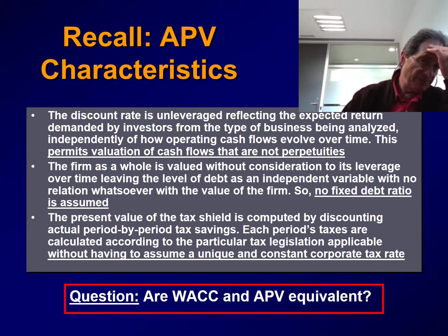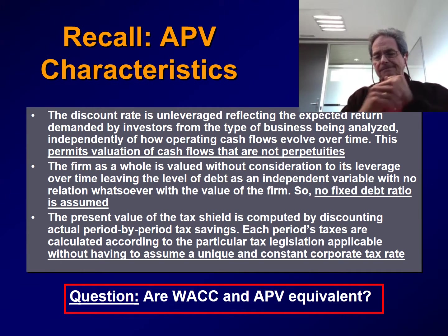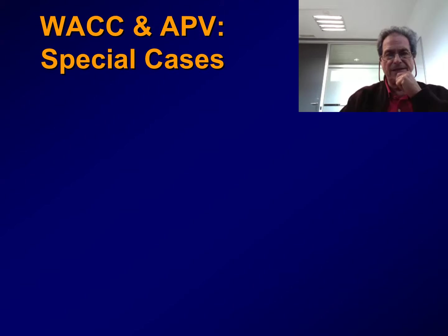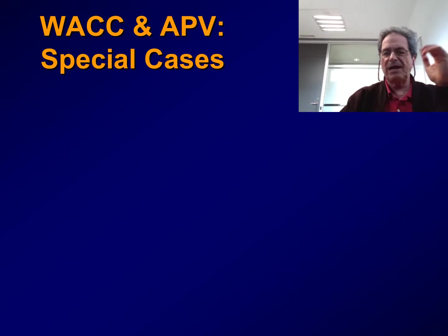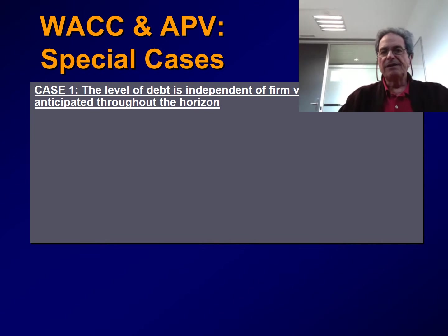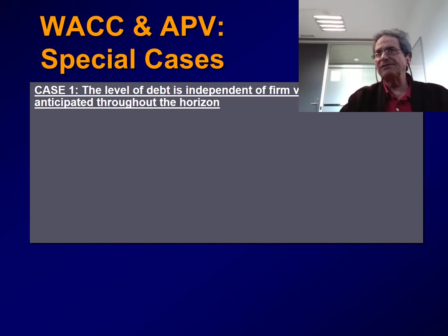But having said this, are WAG and APV really equivalent? It seems that they are not. Let's see what is behind this by illustrating two special or extreme cases. The first case is when the level of debt is completely independent of the value of the firm and can be anticipated by management throughout the horizon — another very realistic-sounding case where the level of debt is completely predetermined by management over time.